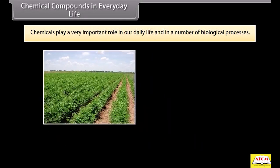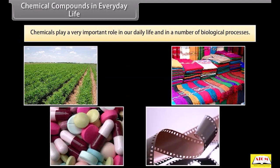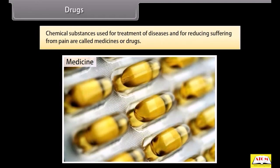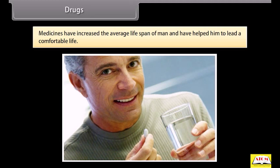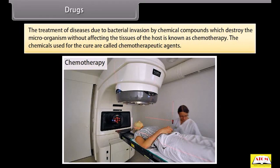Chemicals play a very important role in our daily life and in a number of biological processes. Chemical substances used for treatment of diseases and for reducing suffering from pain are called medicines or drugs. The treatment of diseases due to bacterial invasion by chemical compounds which destroy microorganisms without affecting the tissues of the host is known as chemotherapy. The chemicals used for the cure are called chemotherapeutic agents.